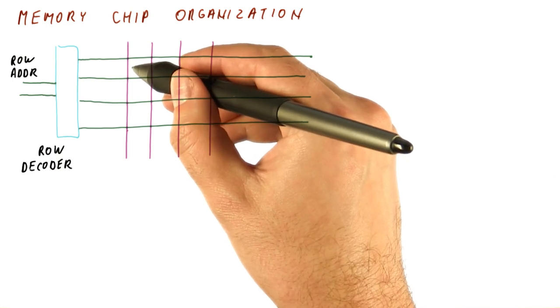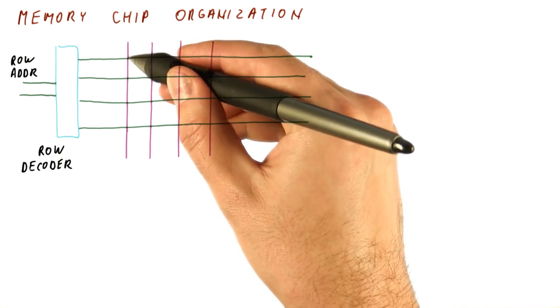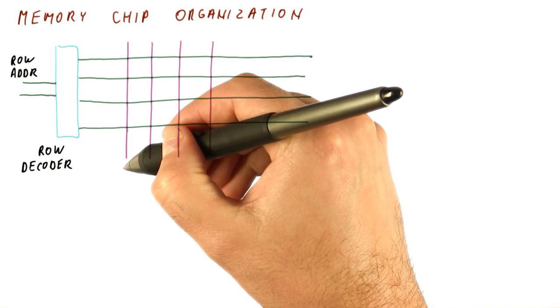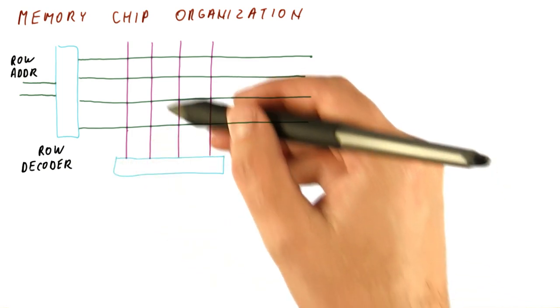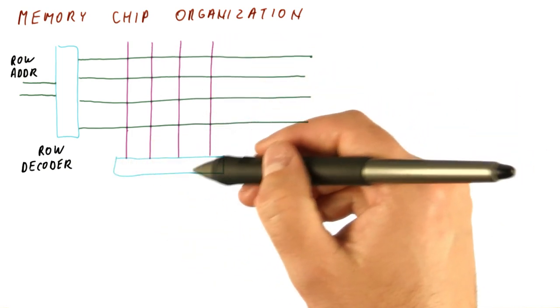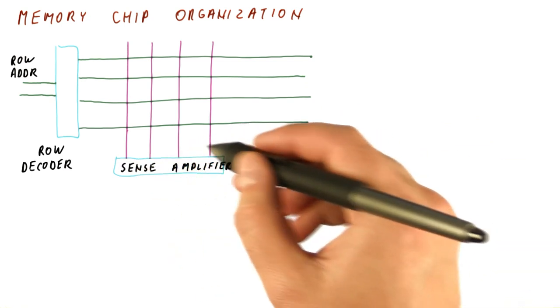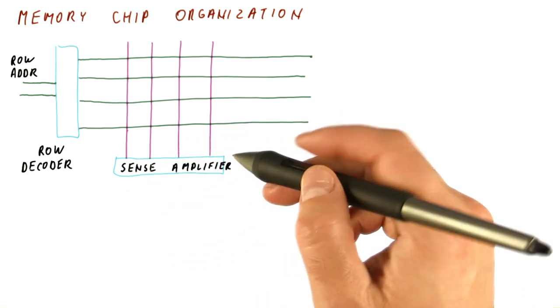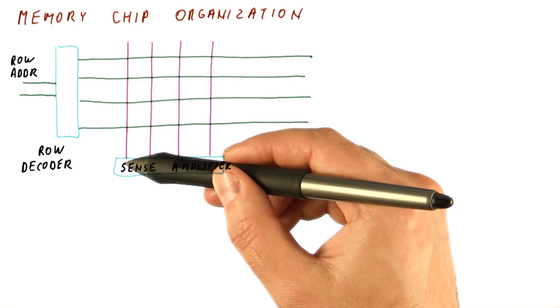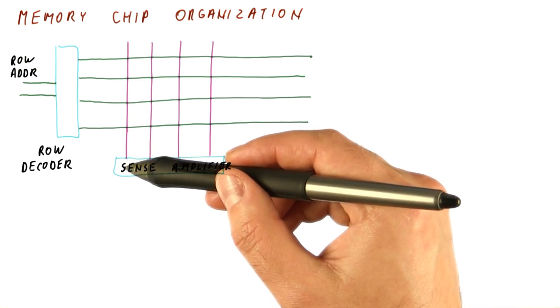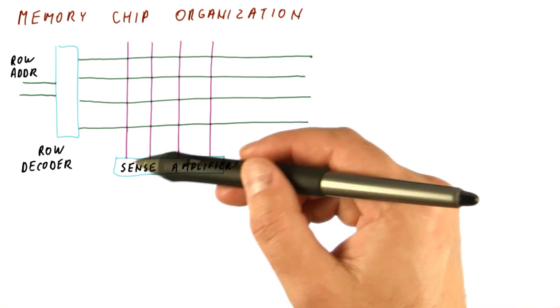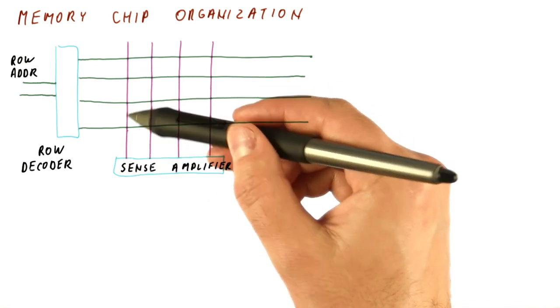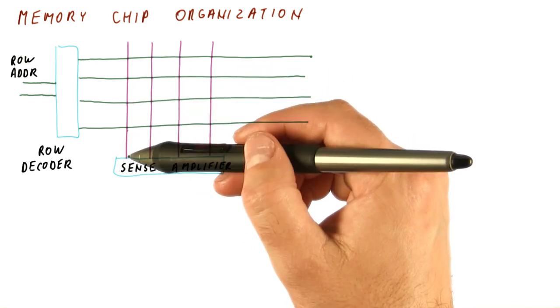If we have a weak cell, we don't want to wait for that cell to raise the whole bit line one way or the other. This is why the bit lines are connected to a device called sense amplifier. What it does is it senses the small changes on the bit line and amplifies them. So it's really helping the cell raise or lower the voltage on the bit line.